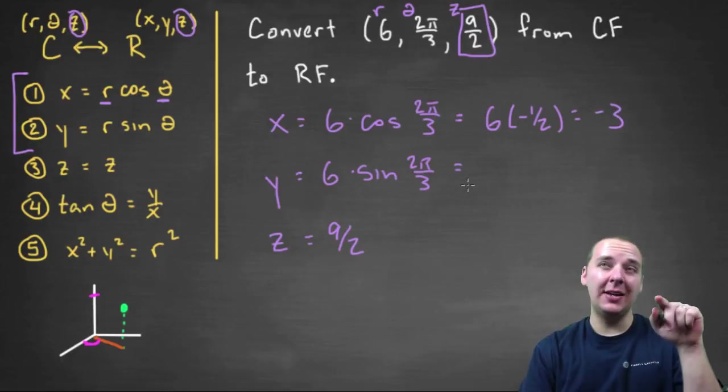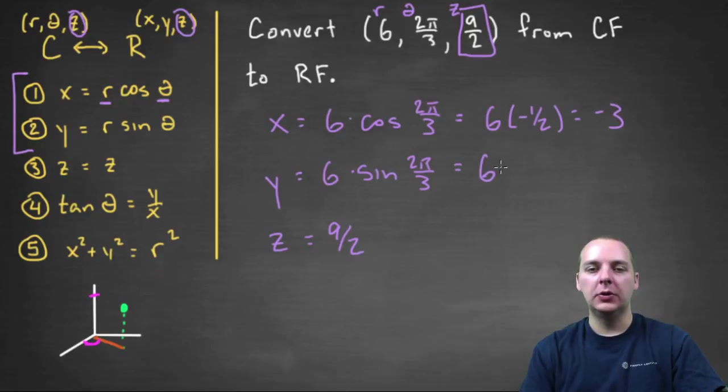And then sine of 2π over 3 will be root 3 over 2. So 6 times root 3 over 2, and 6 over 2 is 3, so we'll get 3 root 3.